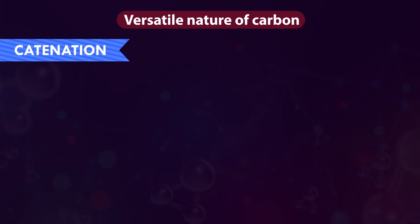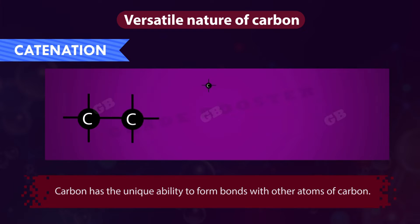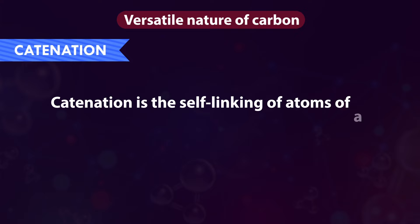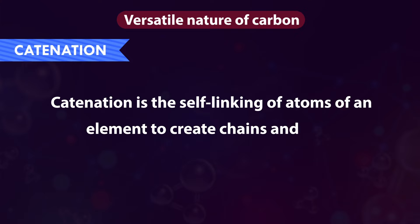Factor 1: Catenation. Carbon has the unique ability to form bonds with other atoms of carbon, which gives rise to the formation of large molecules. This property is called catenation. Catenation is the self-linking of atoms of an element to create chains and rings.